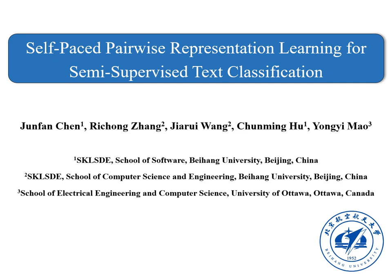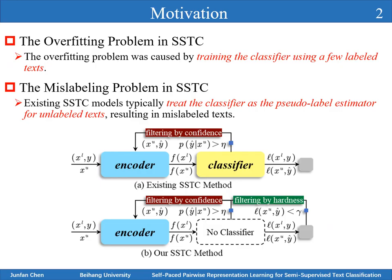This is a three-minute promotional video for self-paced pairwise representation learning for semi-supervised text classification. Our motivations are two points. First, existing semi-supervised text classification models may suffer the overfitting problem caused by training the classifier using a few labeled texts.